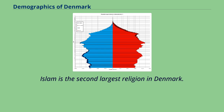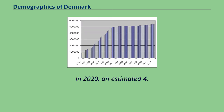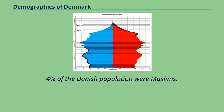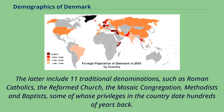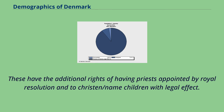Islam is the second largest religion in Denmark; in 2020 an estimated 4.4 percent of the Danish population were Muslims. For historical reasons, there is a formal distinction between approved and recognized congregations of faith. The latter include 11 traditional denominations such as Roman Catholics, the Reformed Church, the Mosaic congregation, Methodists, and Baptists, some of whose privileges in the country date hundreds of years back. These have the additional rights of having priests appointed by royal resolution and to christen or name children with legal effect.